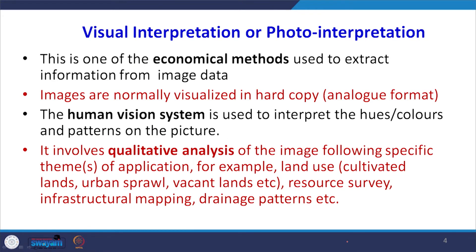Here we are discussing visual interpretation — how the human eye can identify objects very accurately. This is an economical method, particularly for developing countries like India where sophisticated equipment and software cannot always be procured and updated regularly. It remains economical especially for smaller study areas. Normally we visualize images in hard copy format — paper prints — and sometimes perform enlargements of those images using a light table or enlarging equipment.